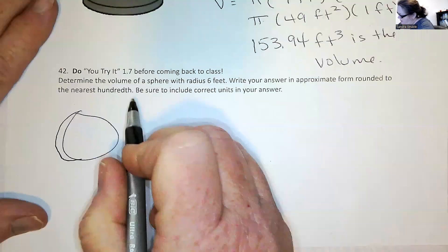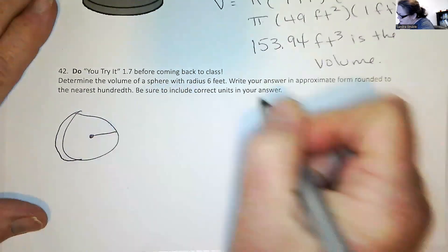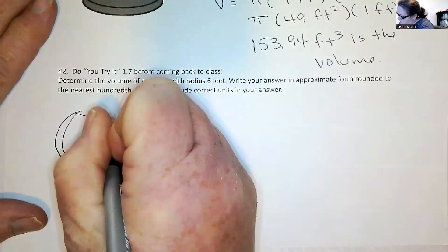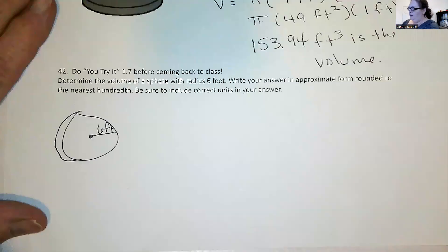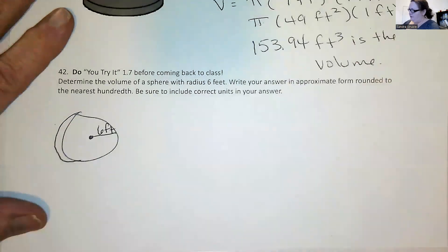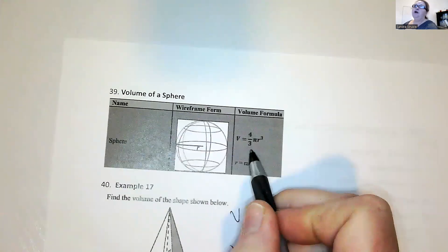And it says the radius is six feet. It's a heck of a big ball. So what's the volume for a sphere? Four thirds pi r cubed.